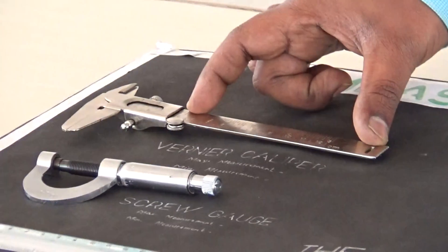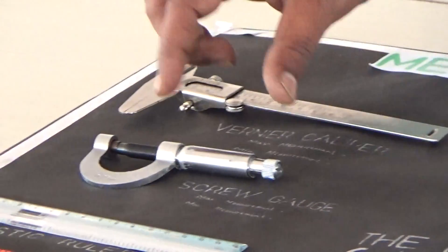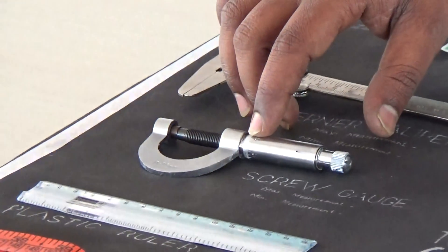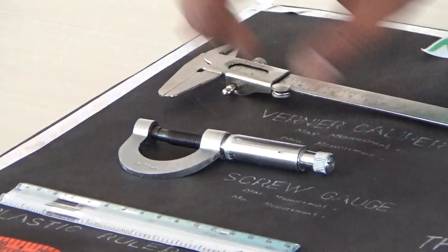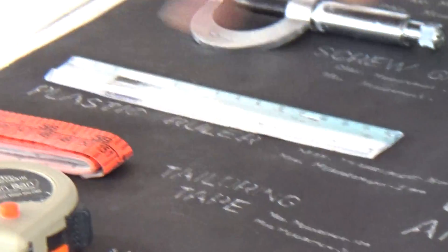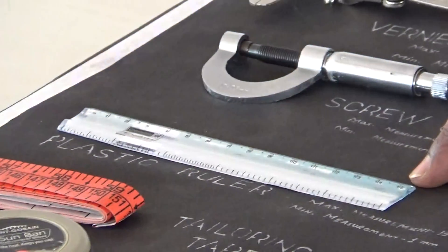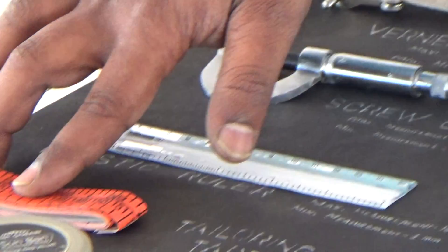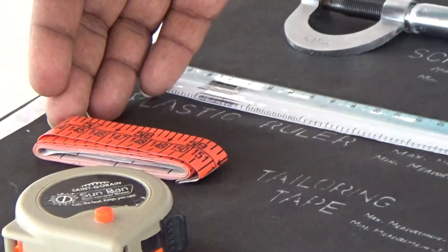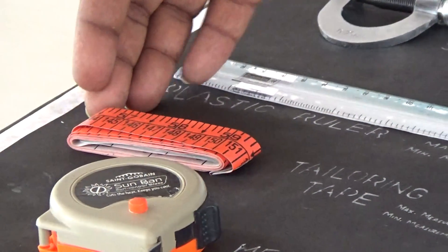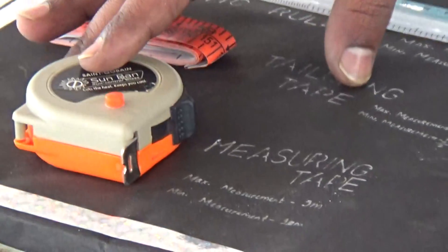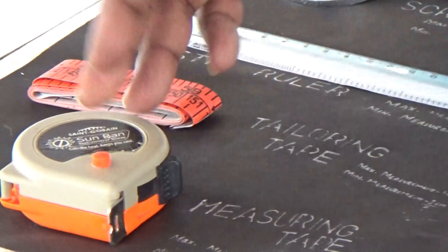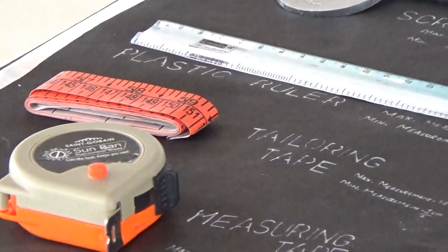The screw gauge can measure down to 1/100th of a millimeter minimum. The plastic unit can measure a maximum of 15 mm. If you take a tailoring tape, it is hardly 1 meter or 1.5 meters. The measuring tape used for construction of buildings is hardly 3 to 4 meters.